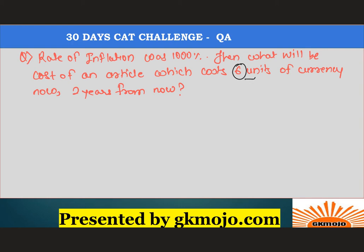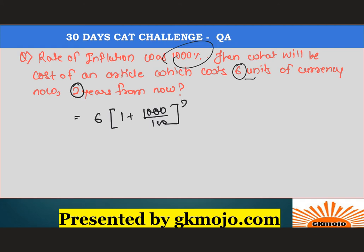The rate of inflation is 1000 percent, meaning it is compounding at 1000 percent. That is the key thing to understand here. The present rate is 6, compounding at 1000 percent, so that is 1000 divided by 100, which is how we calculate compound interest. We need to find the value two years from now — the future value.